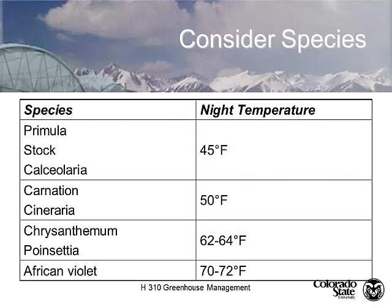It's important you look at the species. Primula, stock, and calceolaria are cool season plants at 45 degrees. Carnations and cineraria at 50, chrysanthemums and poinsettias at 62 to 64, and African violet at 70 to 72. African violet is from the forest floor of Tanzania, mums and poinsettias are sub-mesotropical from around Mexico City, and carnations are higher altitude plants.